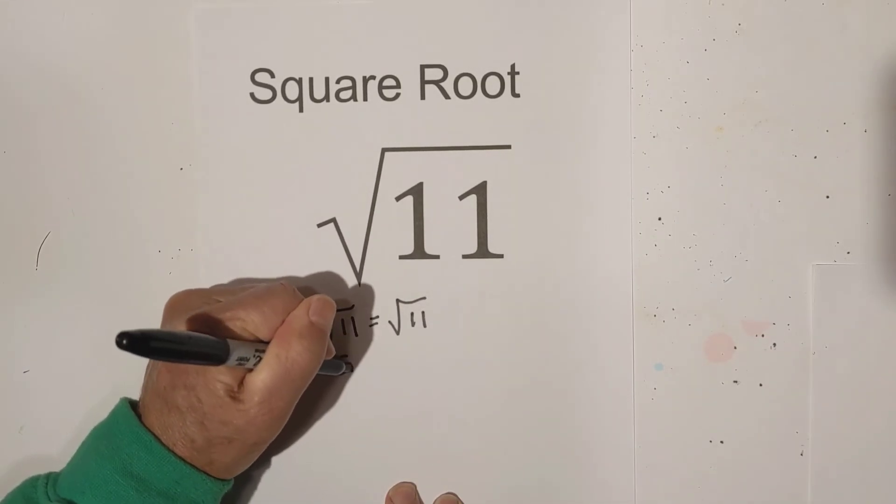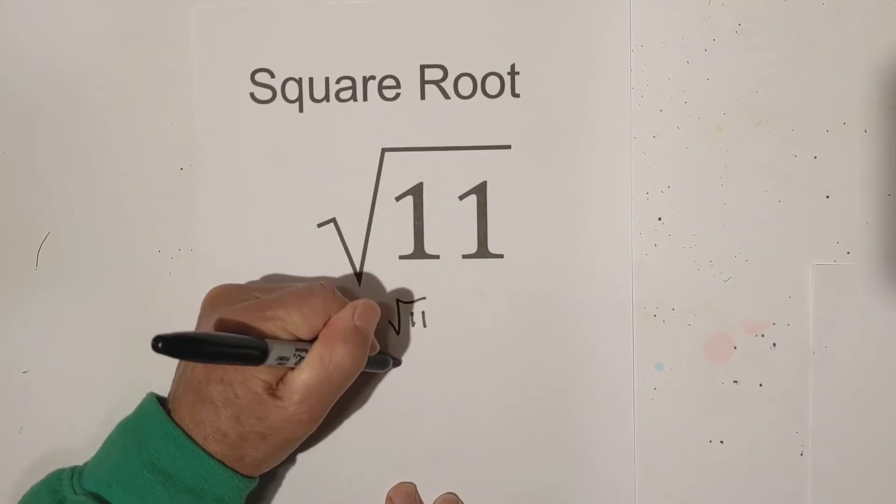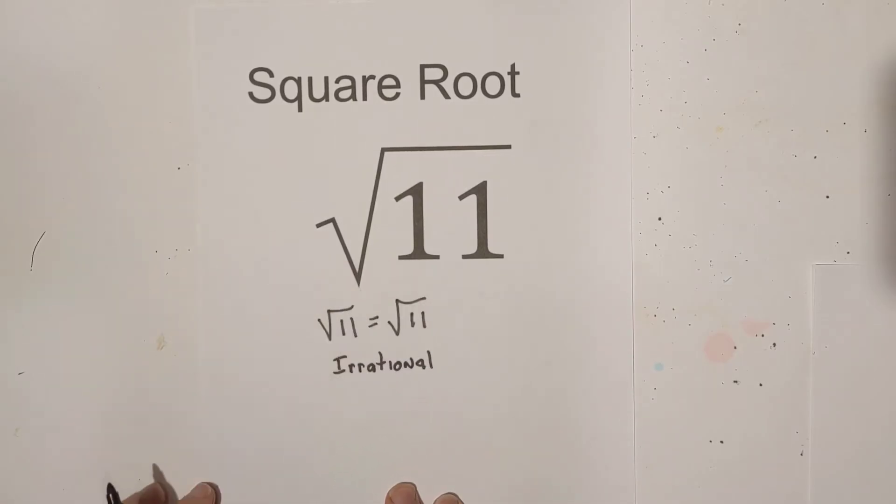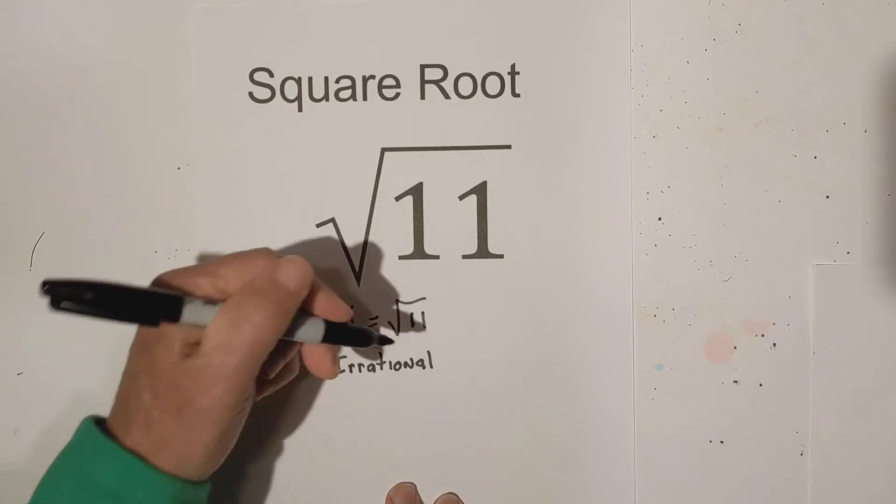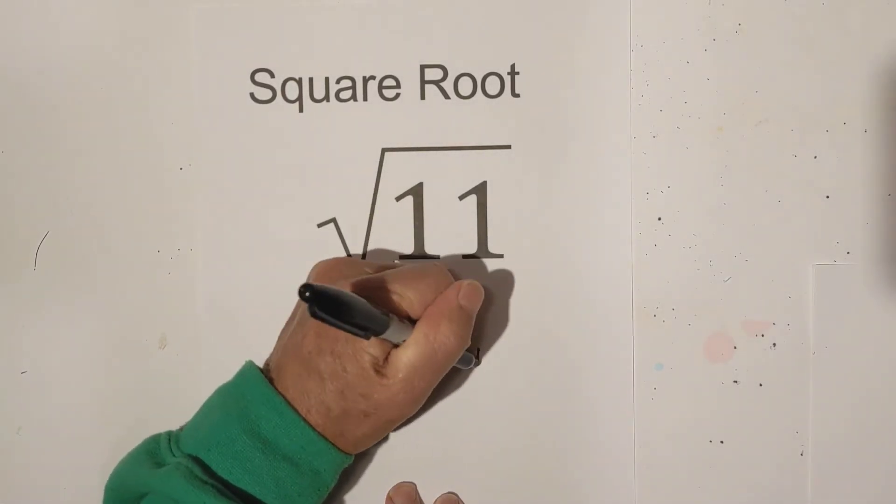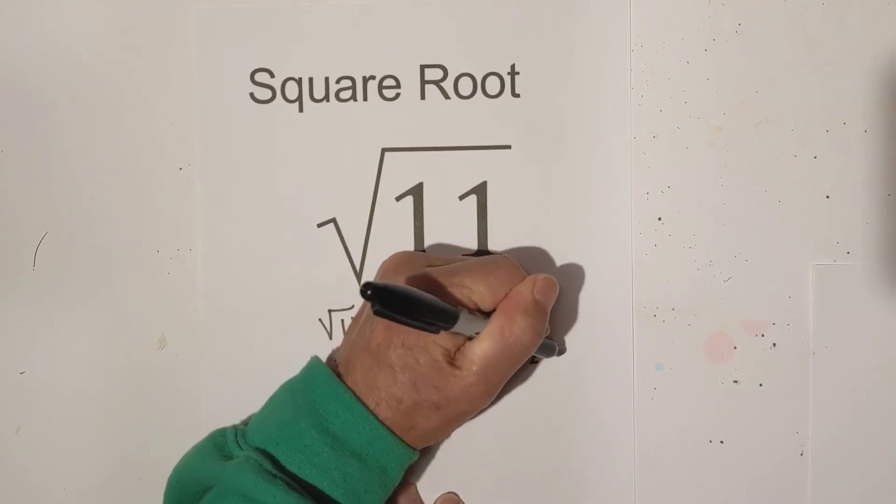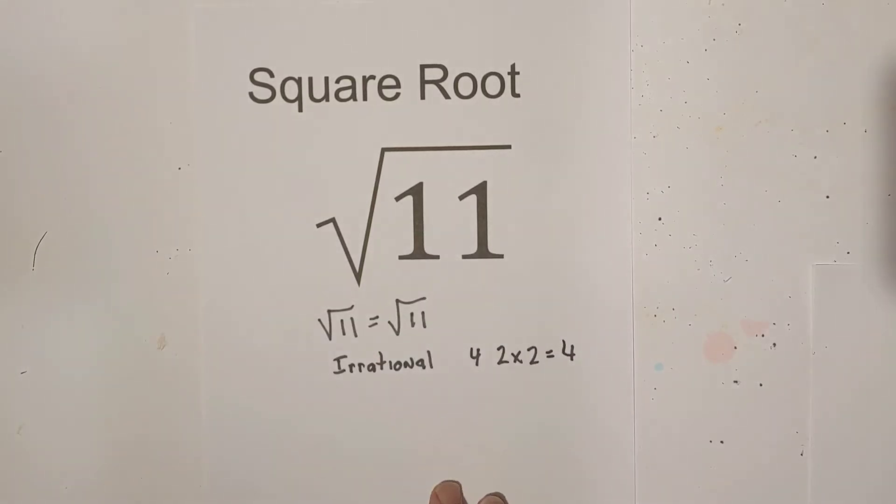Next, it is an irrational number, so that means that there are not two numbers multiplied together that will equal 11. For instance, you have 4. If you multiply 2 times 2, that equals 4. So you do not have that with 11, so it is irrational.